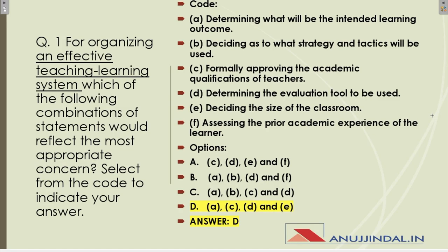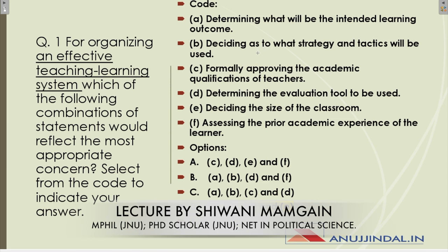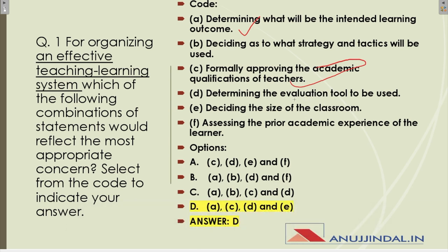The first question is: for organizing an effective teaching-learning system, which of the following combinations of statements reflects the most appropriate concern? The important concerns are: what will be the outcome, determining the qualification of the teacher, choosing the correct evaluation tool, and deciding the size of the classroom. So the correct option is A, C, D, E — answer D.